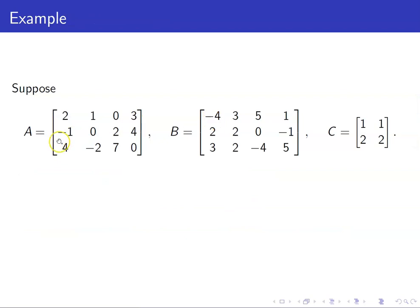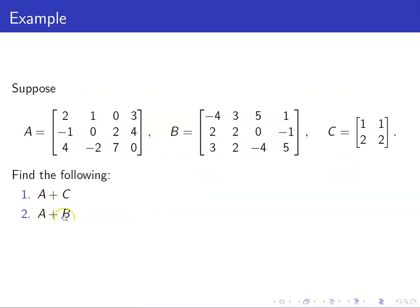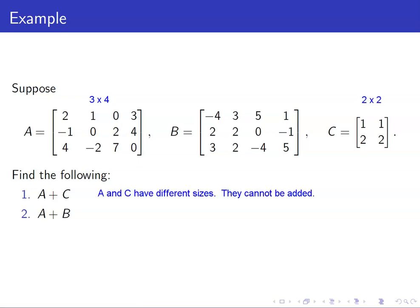Suppose we have these three matrices A, B, and C. Let us find A plus C and A plus B. For A plus C, take note that matrix A has size 3 by 4 whereas matrix C has size 2 by 2. A and C have different sizes, therefore they cannot be added.